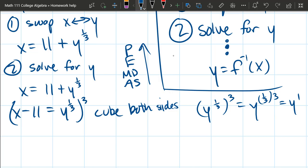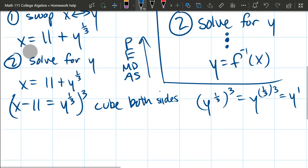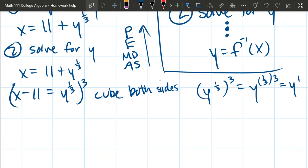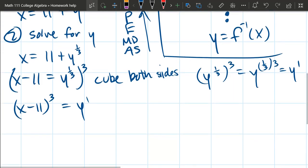So how to write that? I just put a cube over here to indicate I'm cubing the entire equation. Now, on the left side, I have to cube the entire left side. So this is x minus 11 whole thing cubed equals, the one-third times 3 cancels out, and it's just y to the first power.